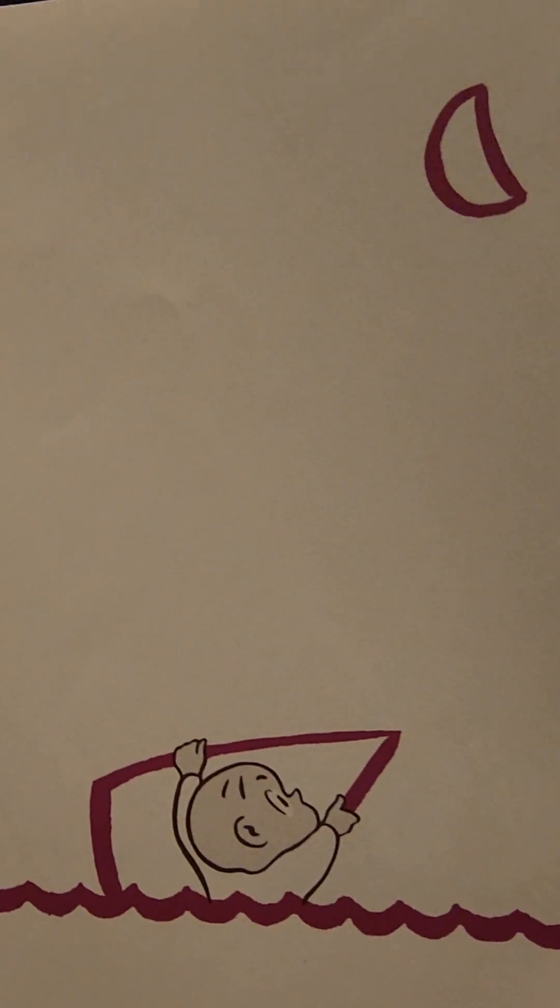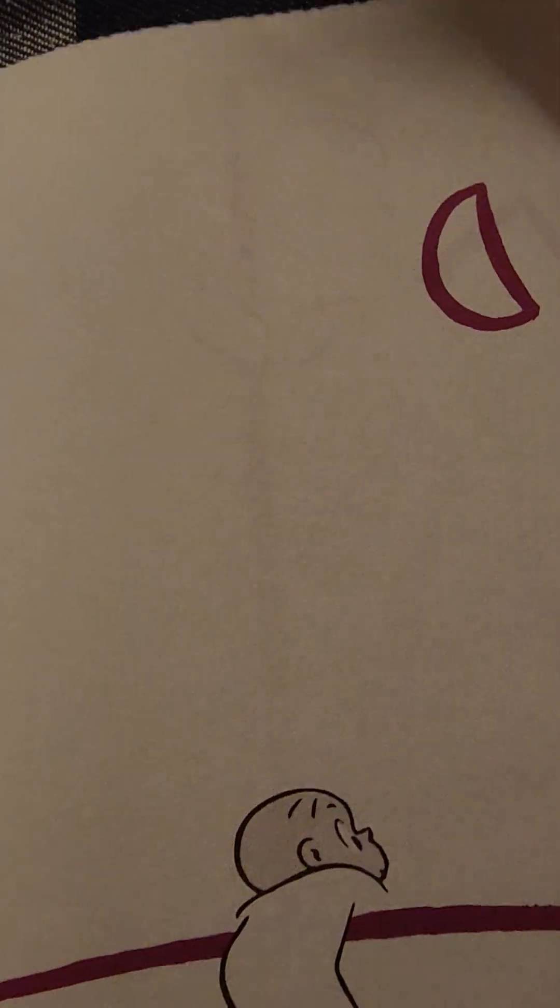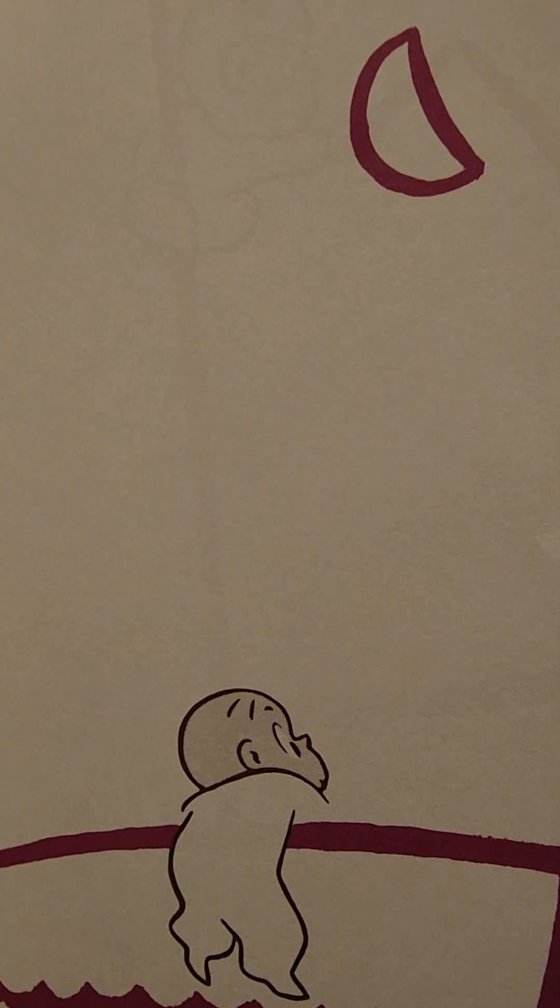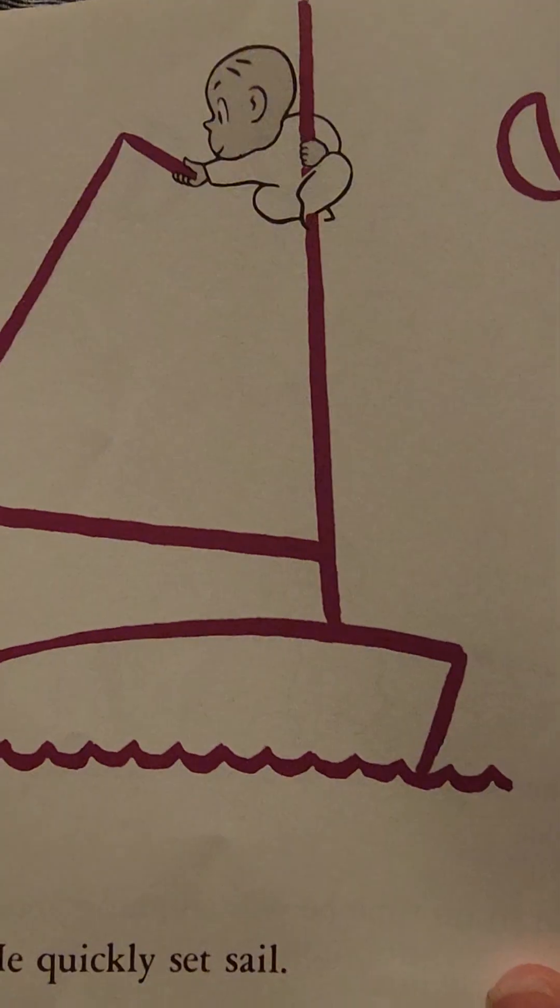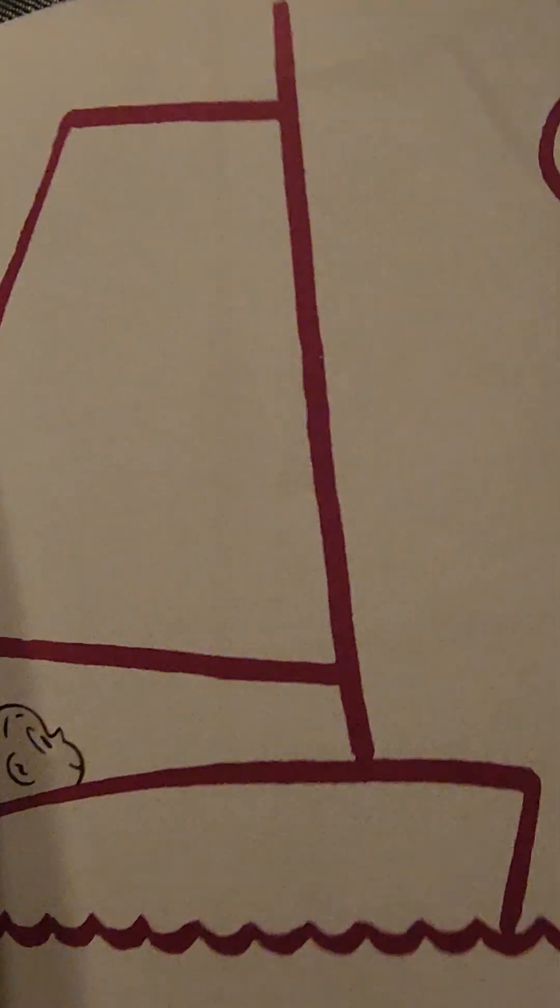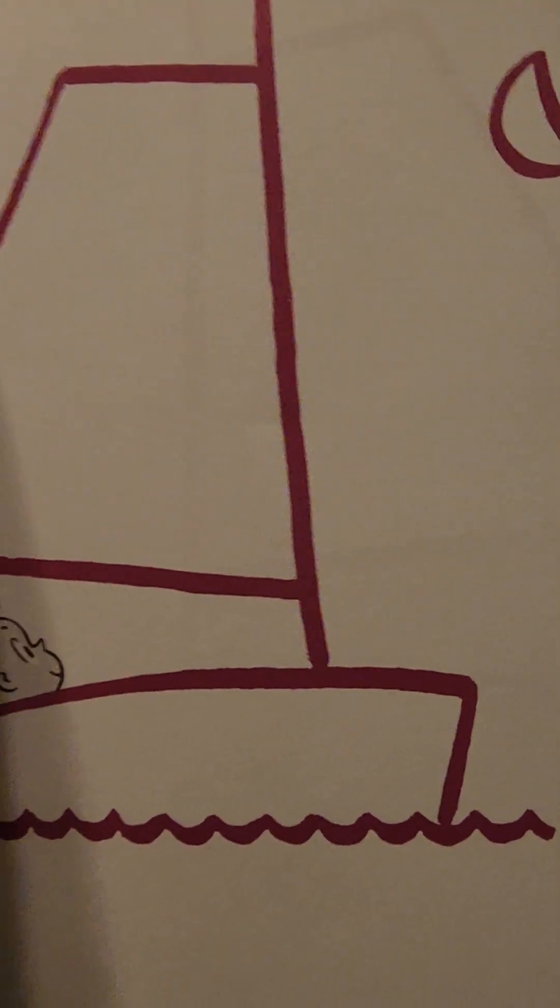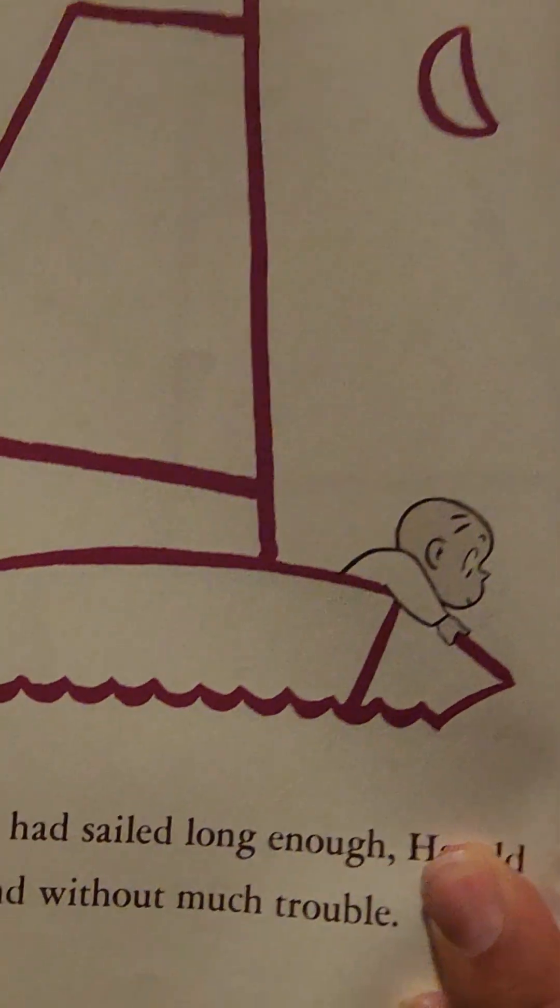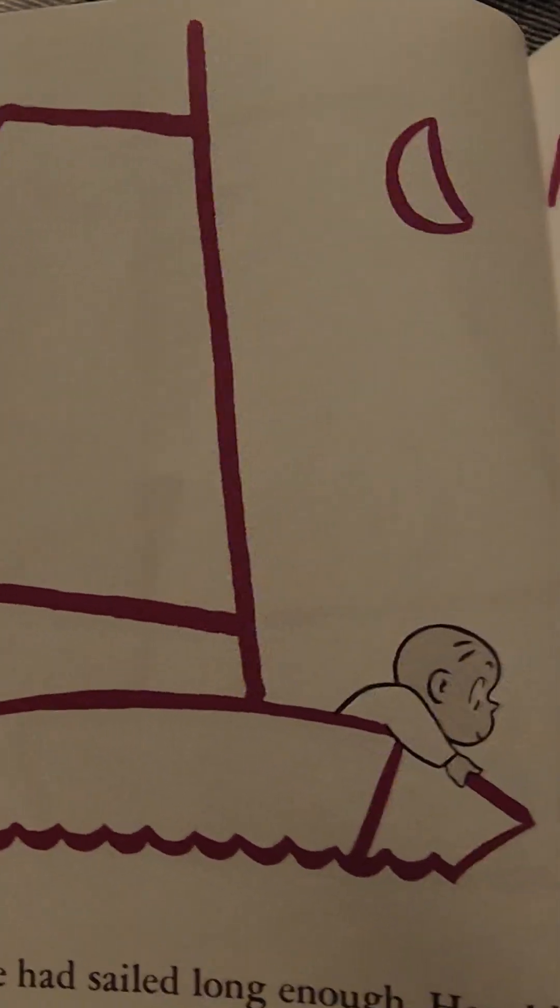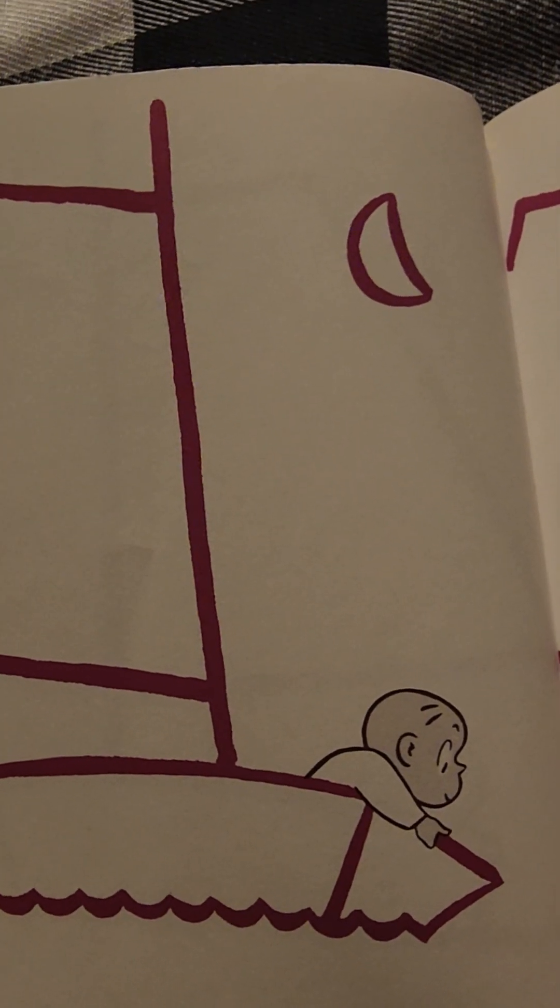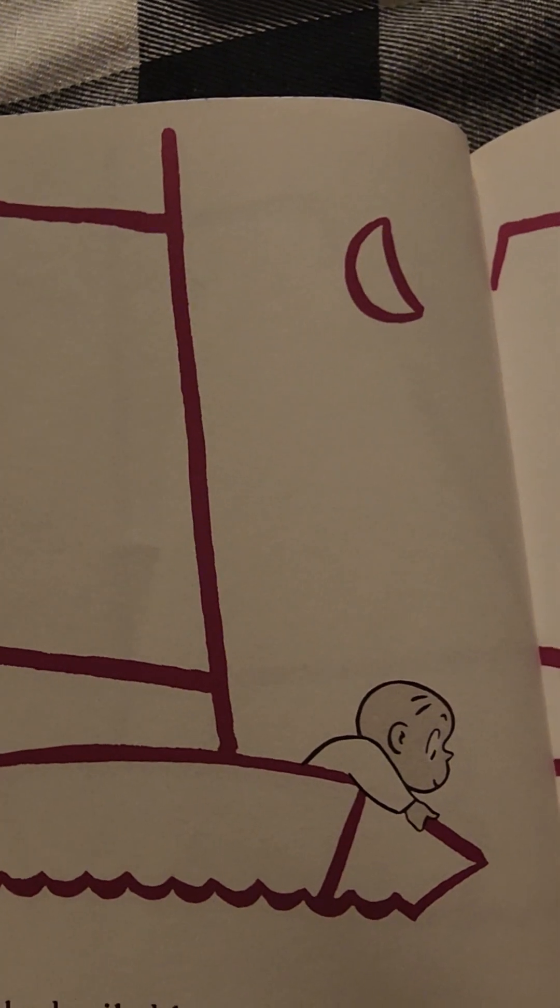He came up thinking fast, and in no time he was climbing aboard a trim little boat. He quickly set sail, and the moon sailed along with him. Look, there's the moon and there he is sailing. After he sailed long enough, Harold made land without much trouble.